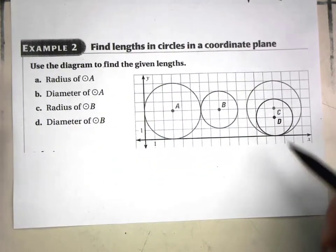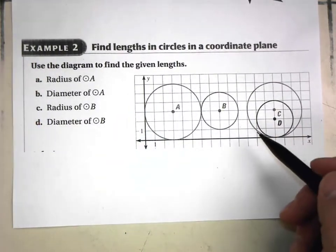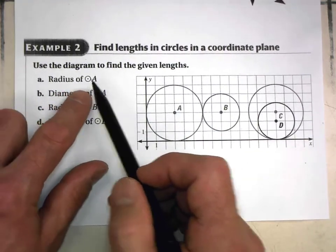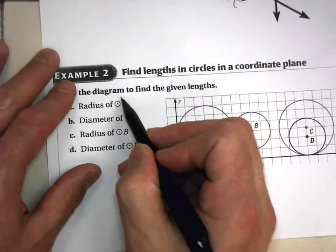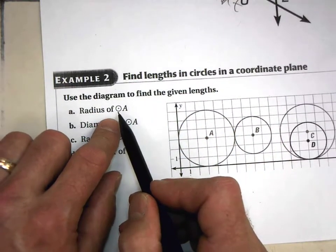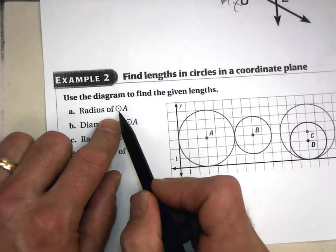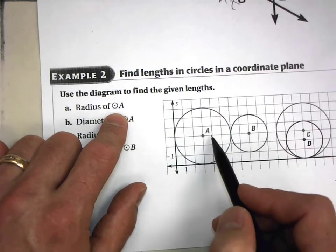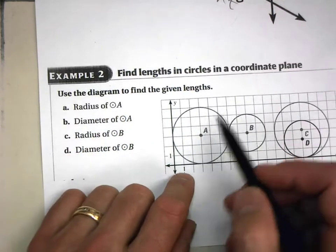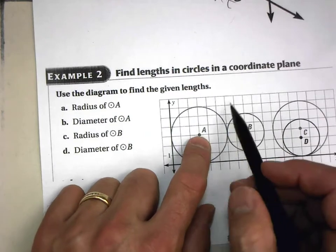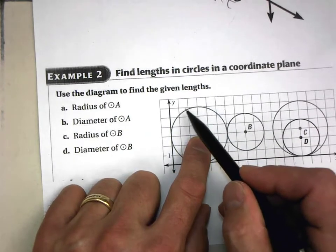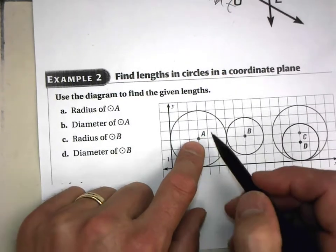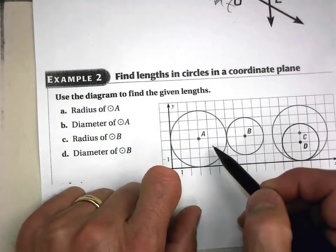When circles are on a coordinate plane, it's easy to measure the radius. This is the symbol for circle, and you say 'circle A' where A is the center. Always identify a circle by its center point. Remember, the center is not part of the circle — the circle is all points that are equidistant from the center and are coplanar.